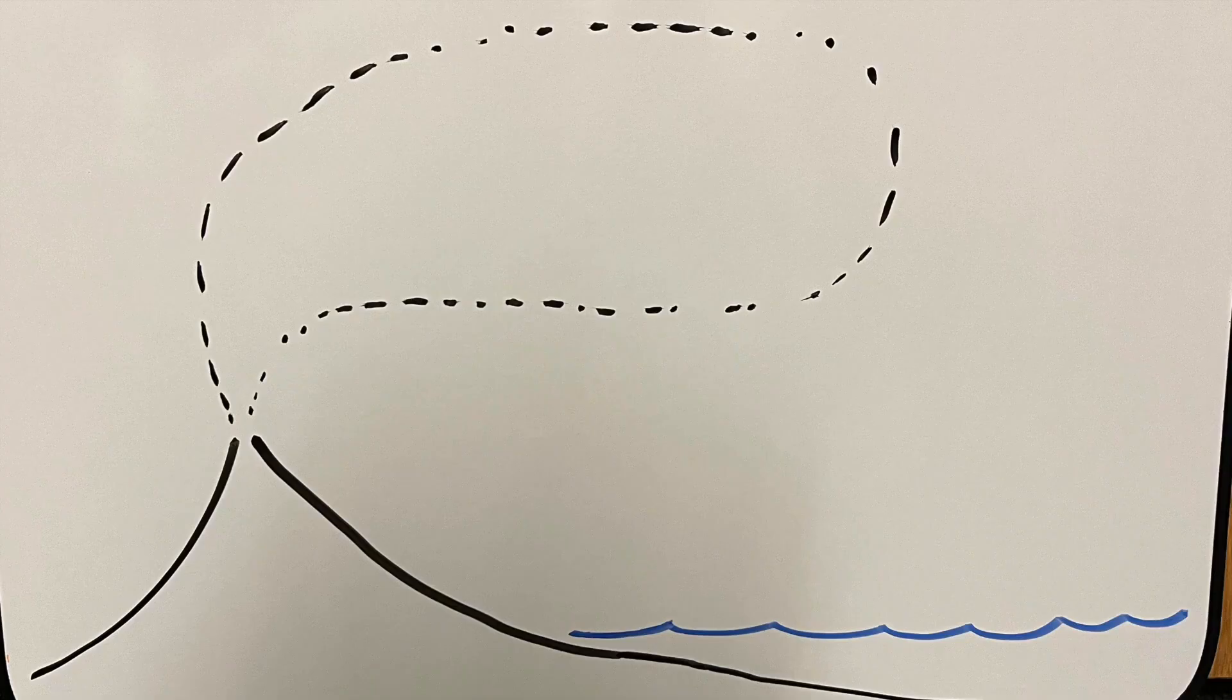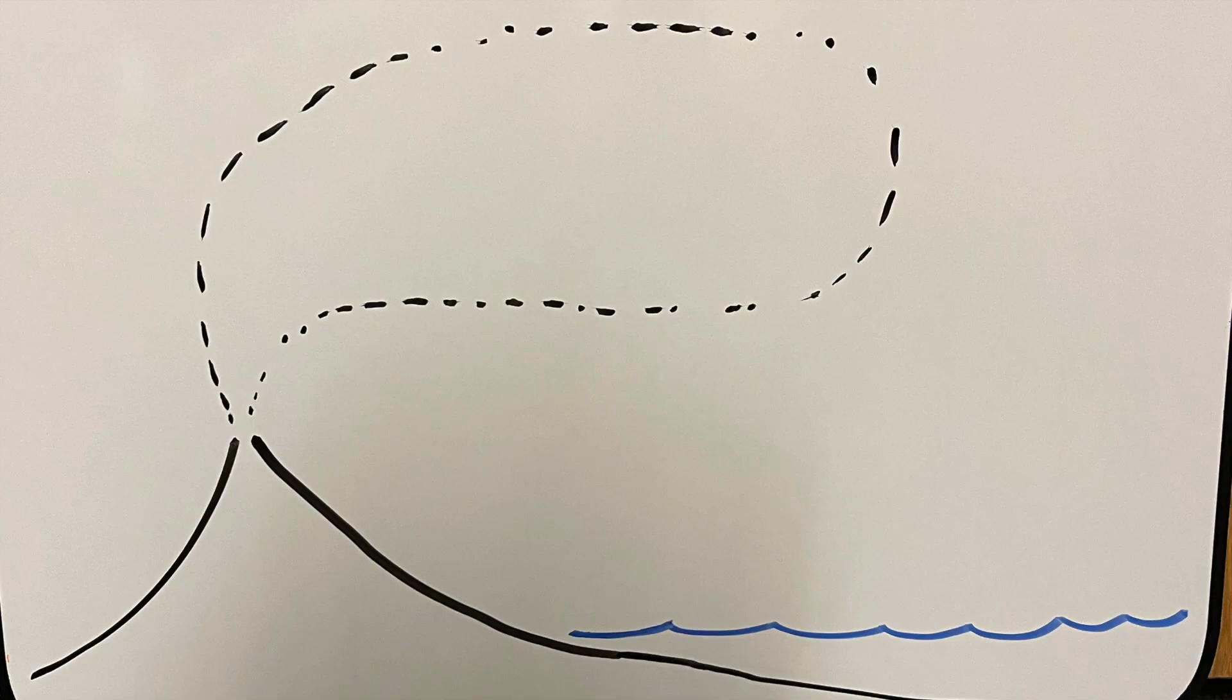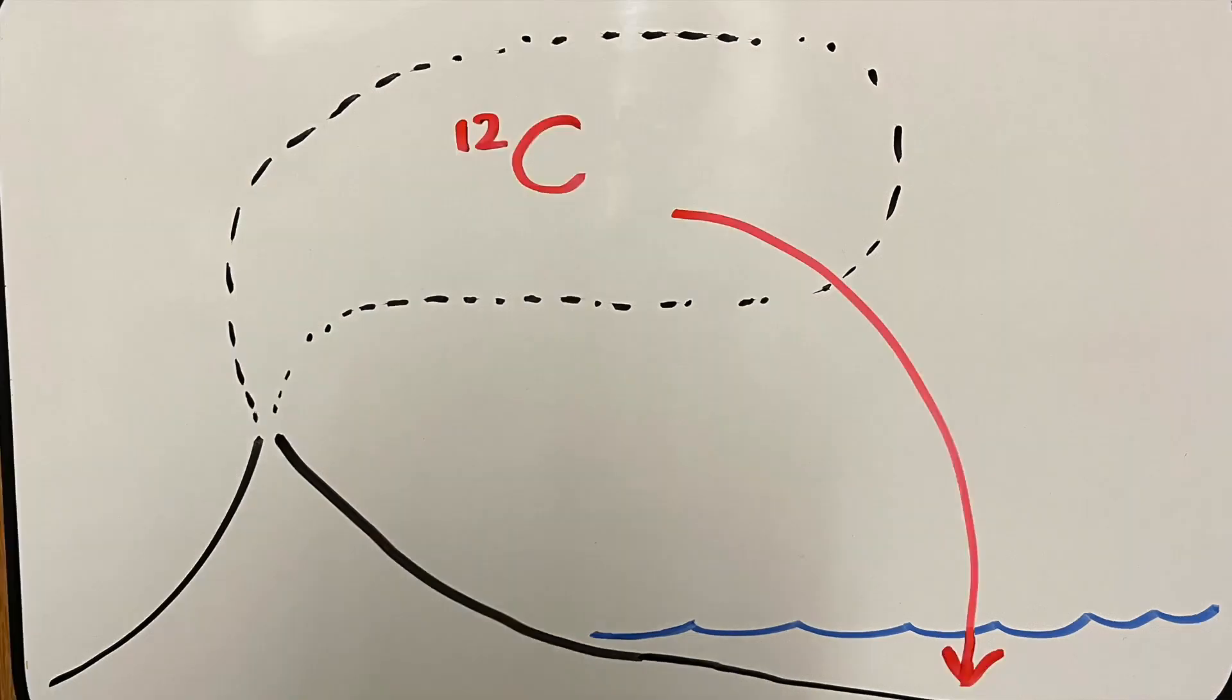During times of high volcanism, for example, we tend to see more negative delta C13 values because carbon dioxide released from volcanoes typically has a high carbon-12 content. So, it's important to interpret delta C13 values in their geologic and temporal context.